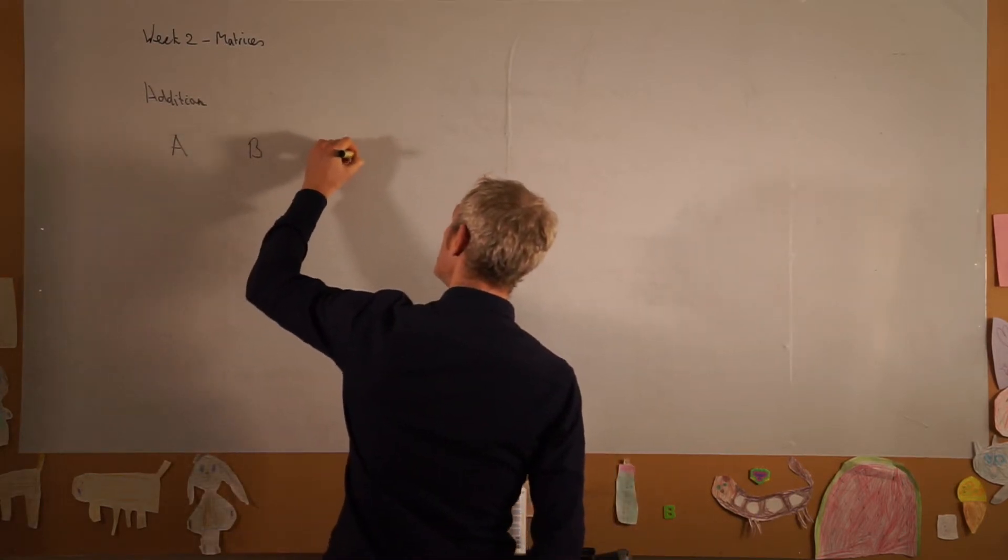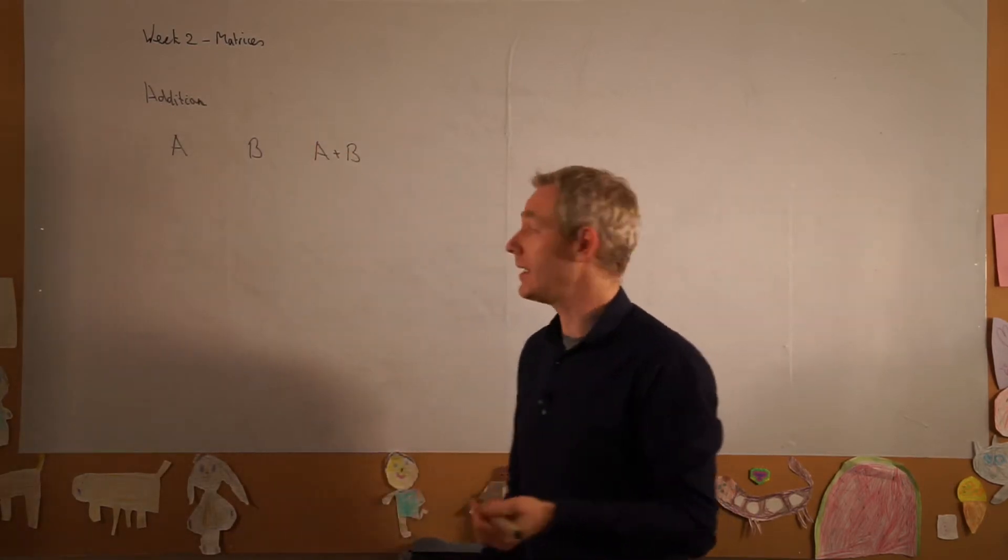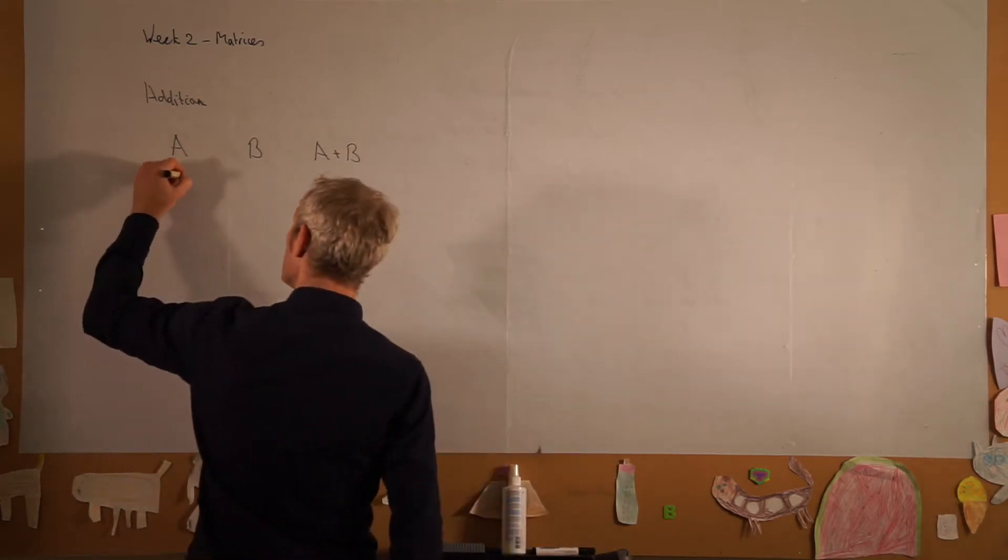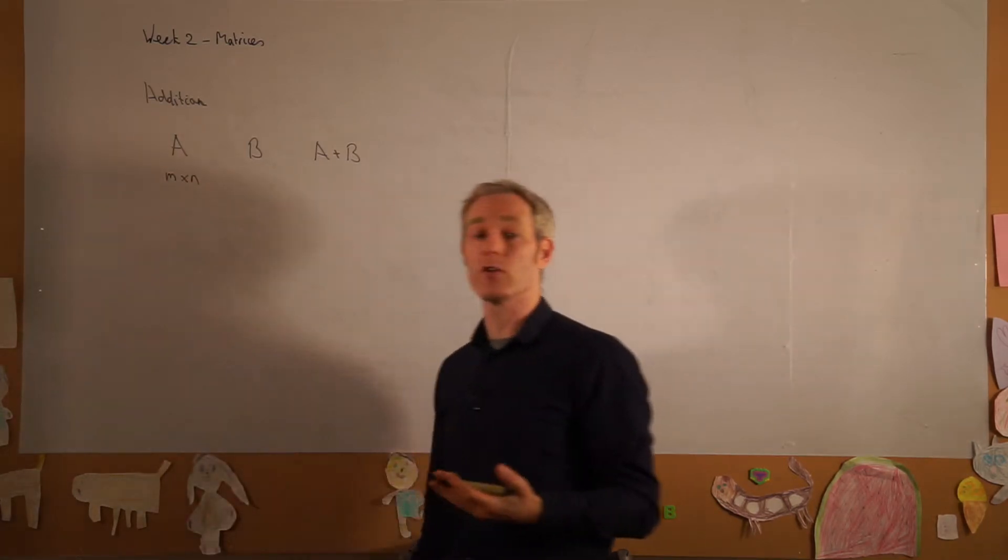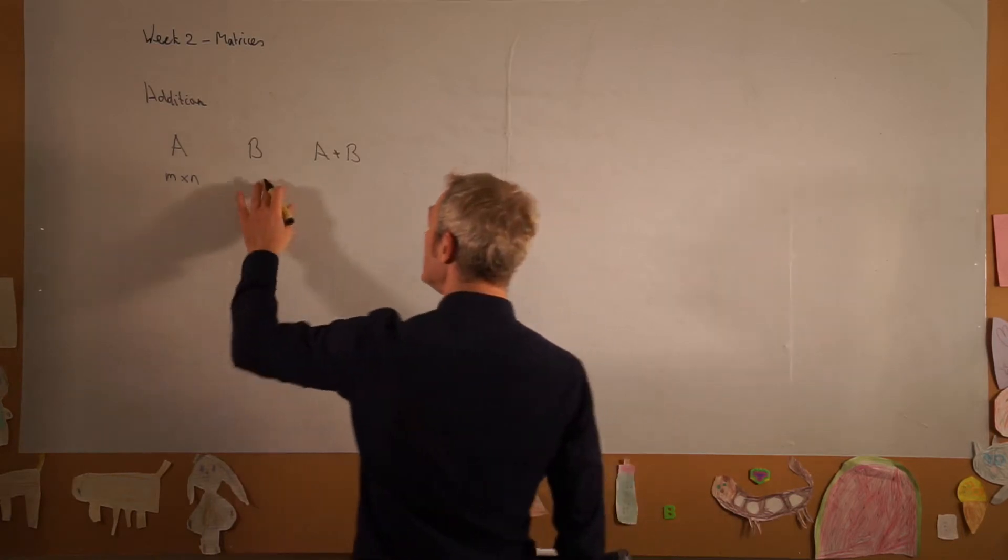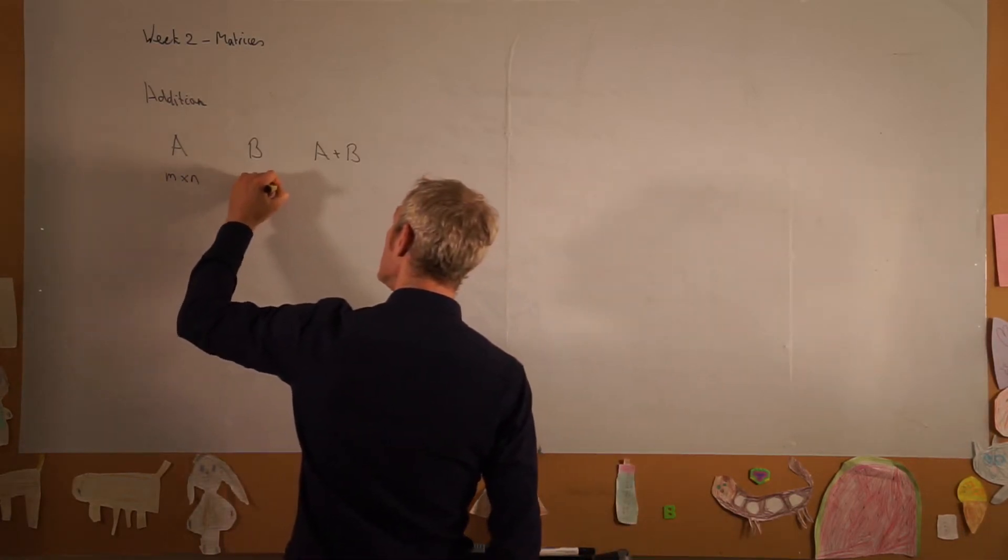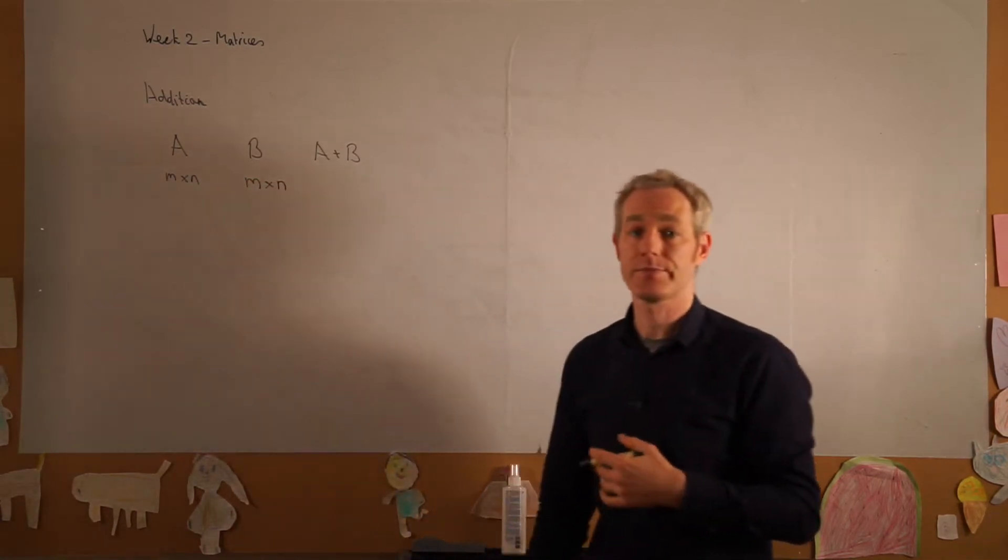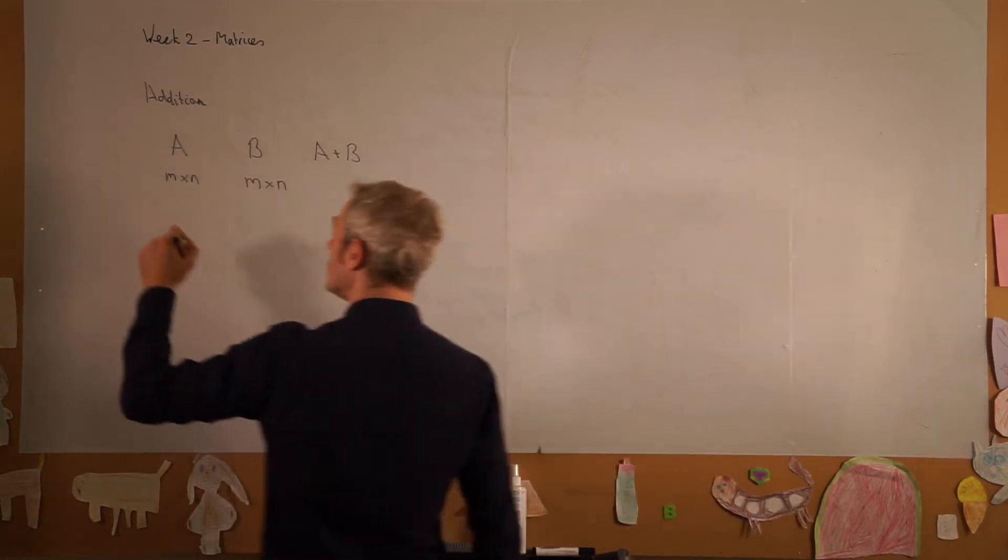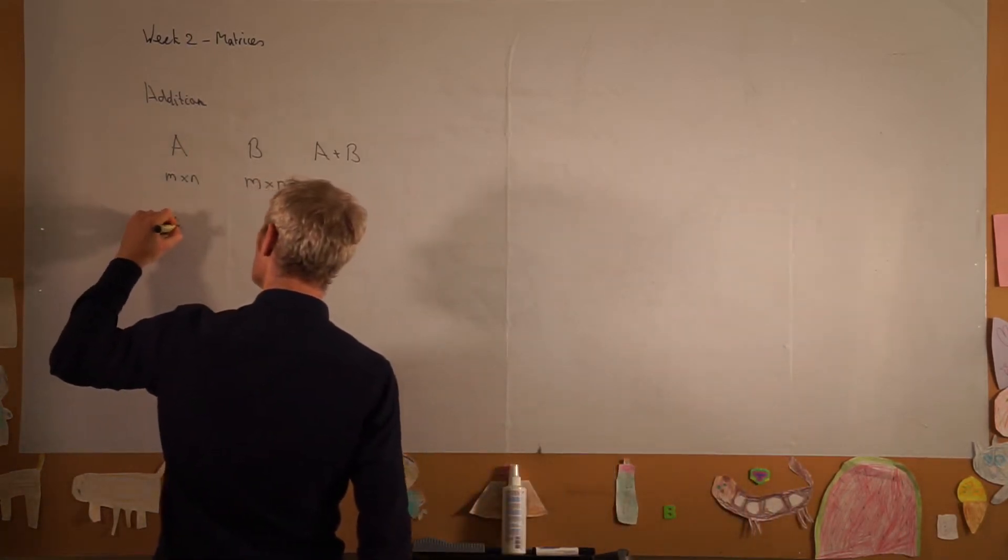Well, there is a requirement here that if A is m times n, so has m rows and n columns, to be able to add these, B must have the same dimensions.